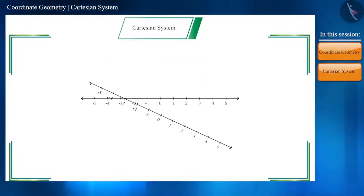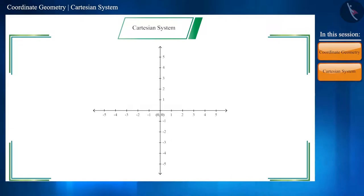The horizontal line is called x-axis and it is named as x x dash. Similarly, the vertical line is called y-axis and it is known as y y dash. X coordinate is also called abscissa and the y coordinate is also called ordinate. The two axes intersect each other at the point zero, which is called the origin.